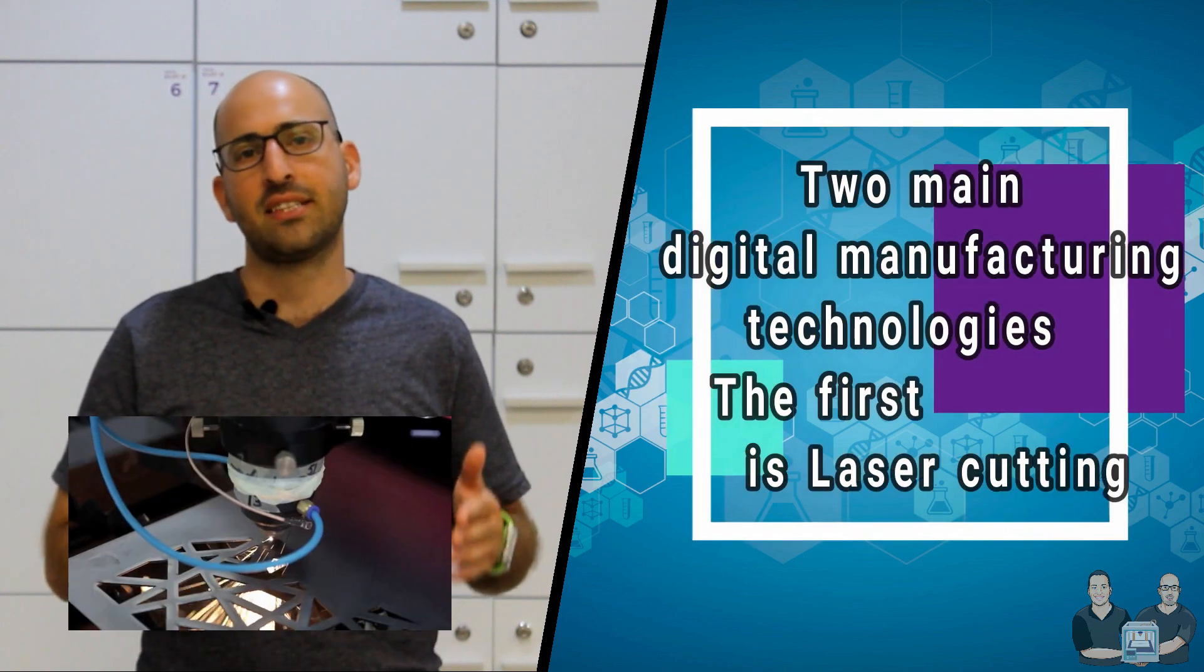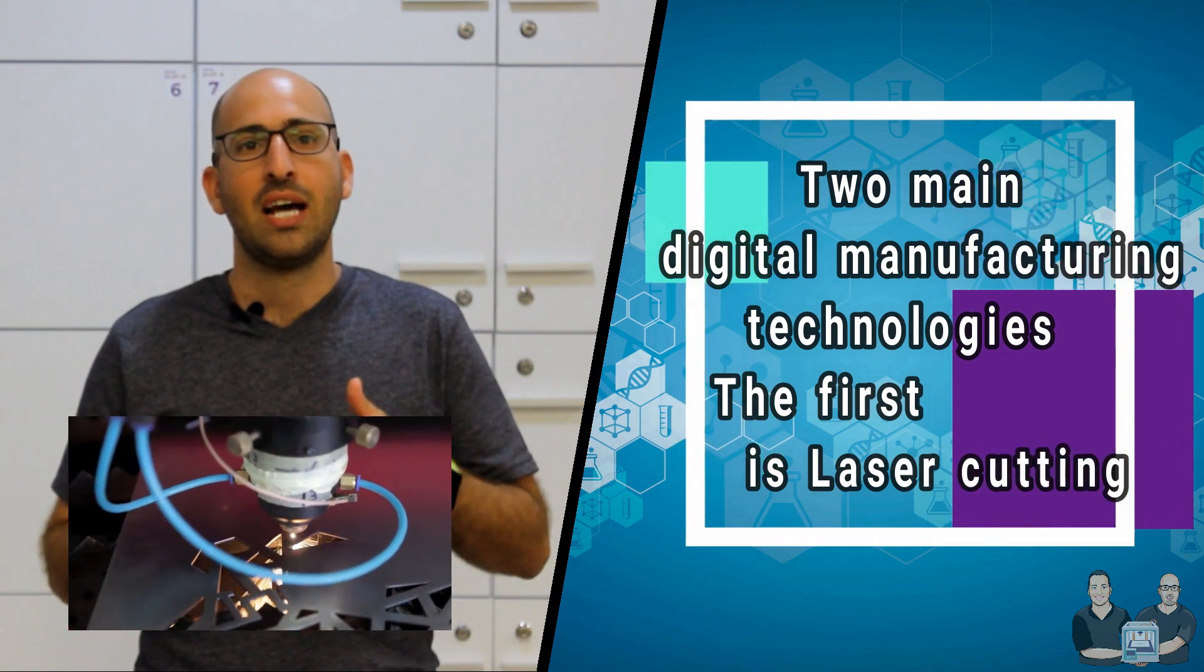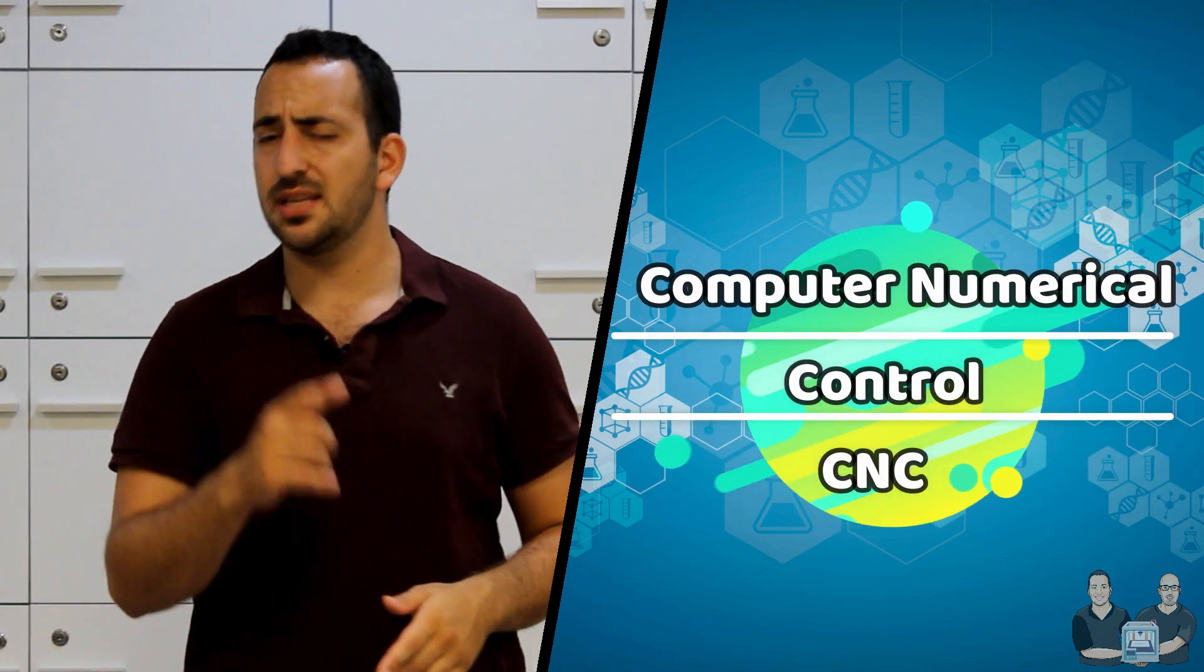To break it down, there are two main digital manufacturing technologies. The first is laser cutting technology that uses a laser to cut materials and is typically used for industrial manufacturing applications. The second is computer numerical control, or CNC.